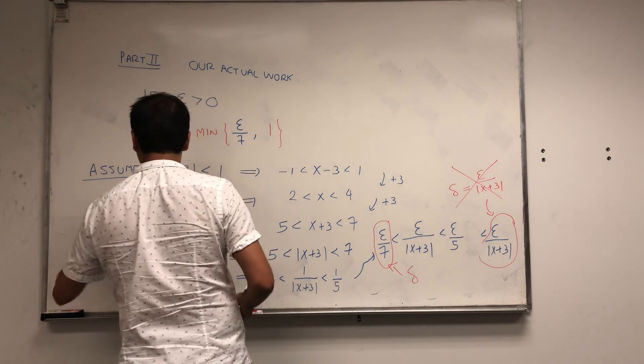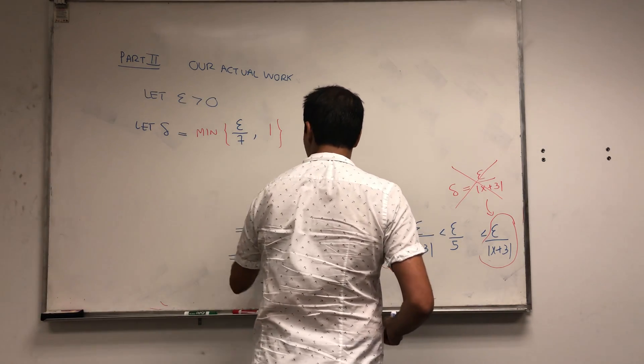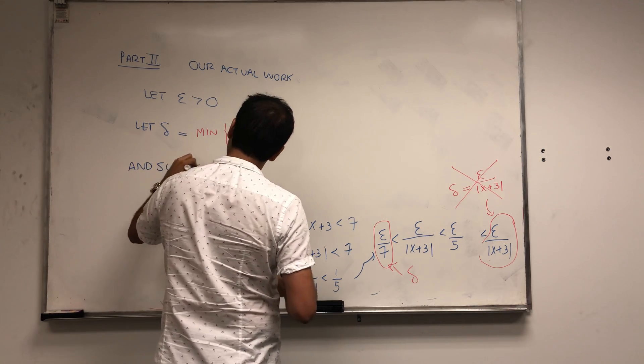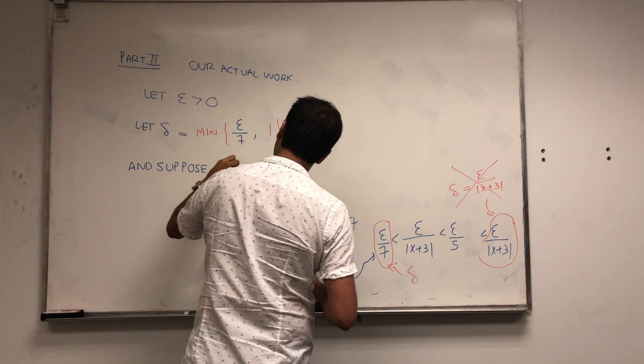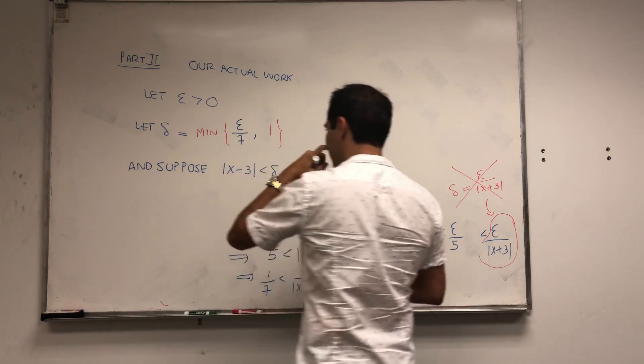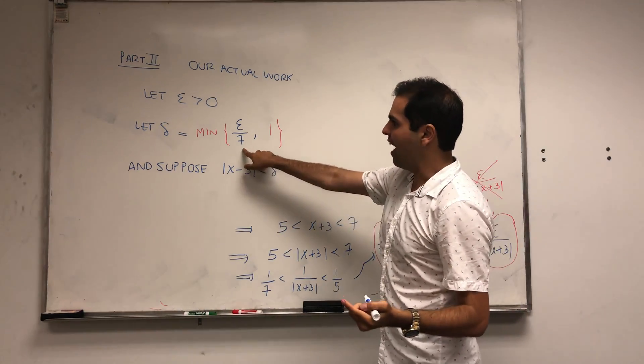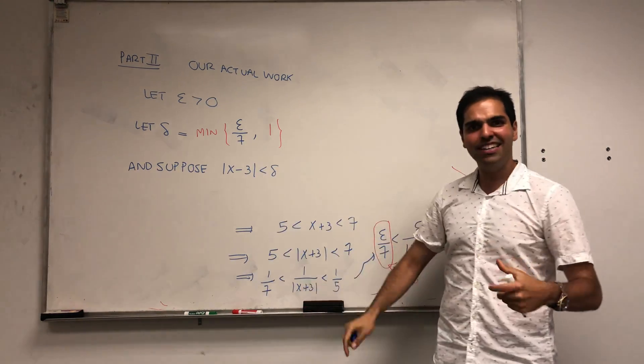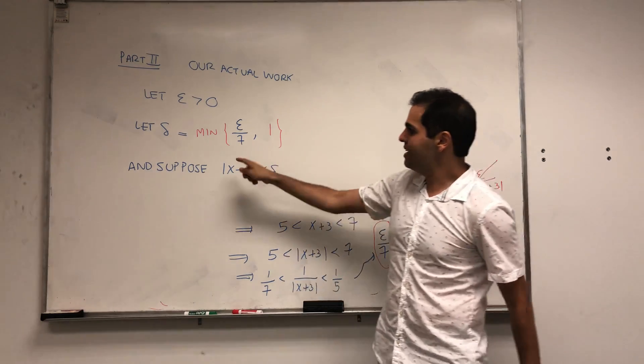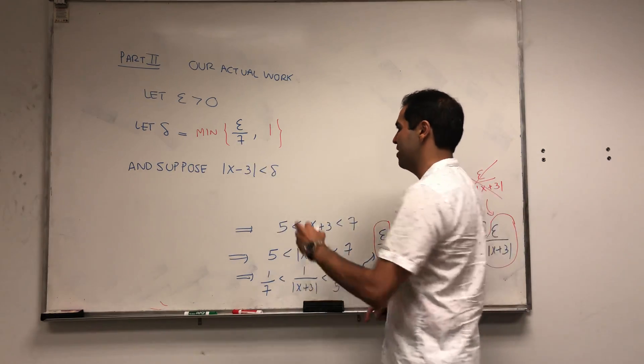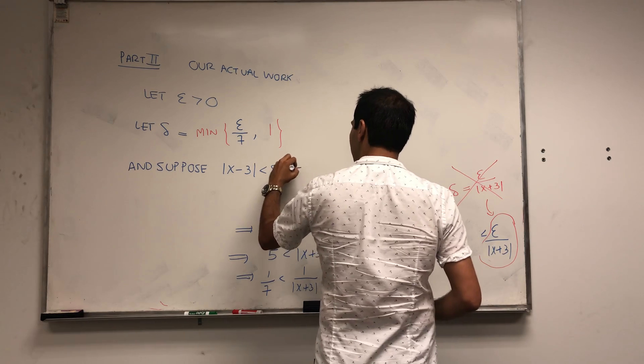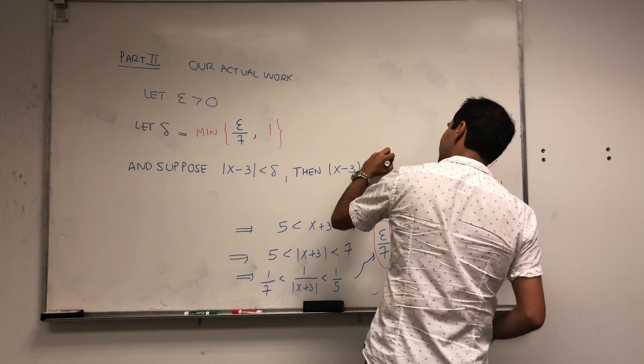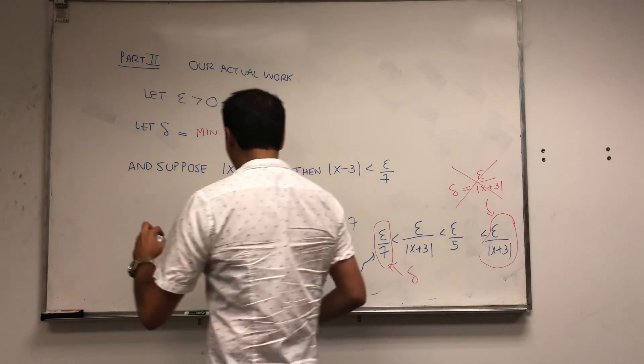Suppose that x minus 3 is less than delta. Then we have two things. On the one hand, because delta is the smaller one of the two, and we want x minus 3 to be even smaller, it means x minus 3 is smaller than both of them. We have that x minus 3 is less than epsilon over 7.